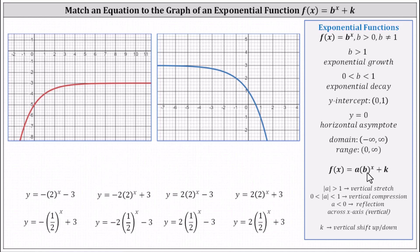Recall if b is greater than one, we have exponential growth. If b is between zero and one, we have exponential decay. The value of k shifts the graph up or down and affects the horizontal asymptote. If k is positive, the graph is shifted up k units. If k is negative, the graph is shifted down k units.